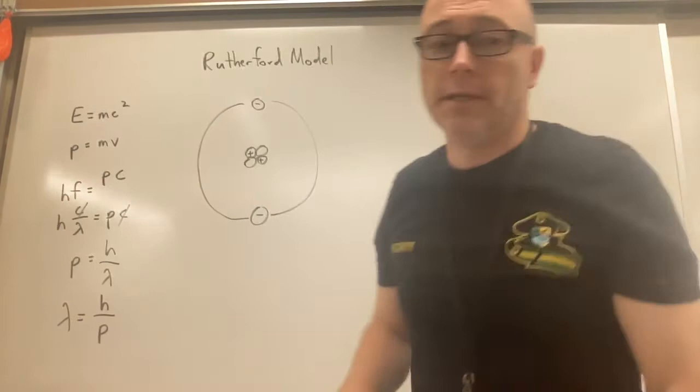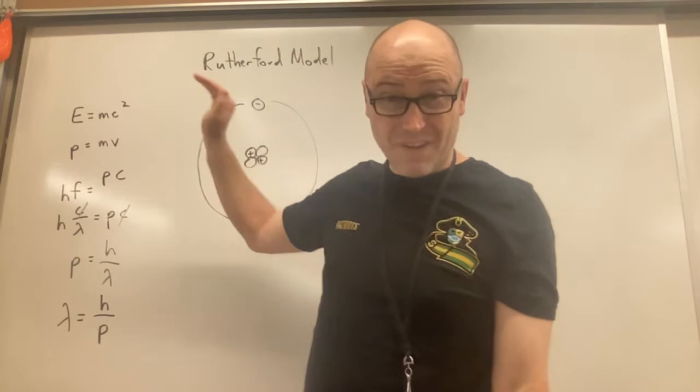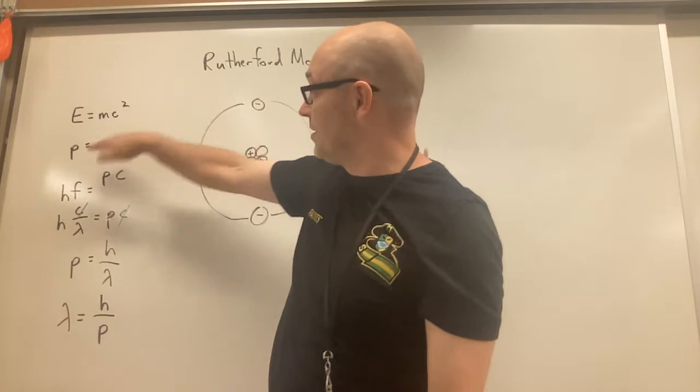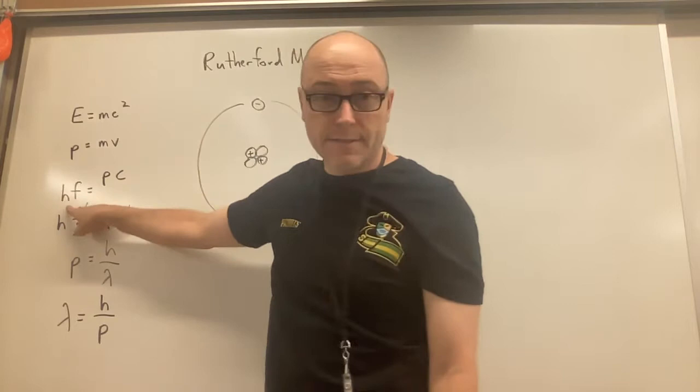And I have this over here because remember this was how we came up with our de Broglie wavelength that's going to relate to this stuff. Just remember E equals mc squared, momentum is mass times velocity, so then energy, if we're talking about light, is hf.